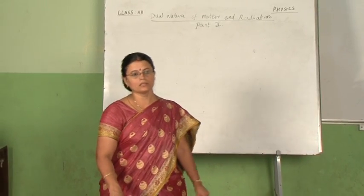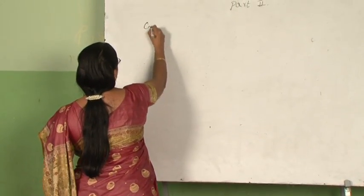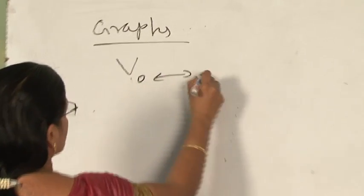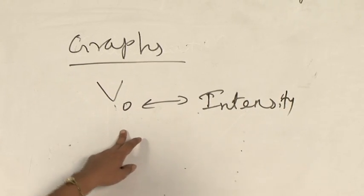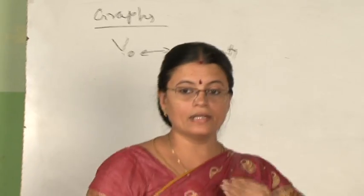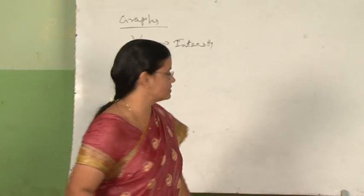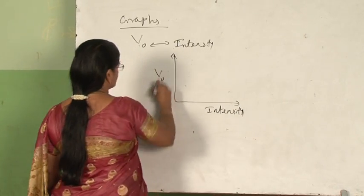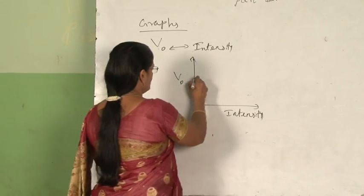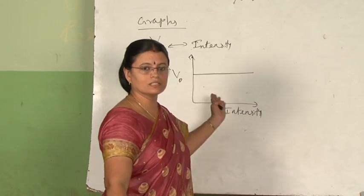In one or two mark questions, they may ask you to draw additional graphs. For example, the graph between stopping potential and intensity. We know that stopping potential is independent of intensity of incident radiation. So if you take intensity on the x-axis and stopping potential on the y-axis, you get a straight line parallel to the intensity axis. This means as intensity changes, there is no change in the value of stopping potential.